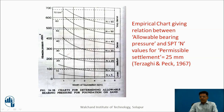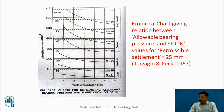It is also possible to estimate allowable bearing pressure using an empirical chart that gives the relation between allowable bearing pressure and SPT value N for a permissible settlement of 25 mm — given by Terzaghi and Peck (1967). Depending on the width of foundation and N values, one can read off the allowable bearing pressure. For example, if N is 30 and the width of foundation is 2 meters, one can expect an allowable bearing pressure of approximately 330 kN/m².